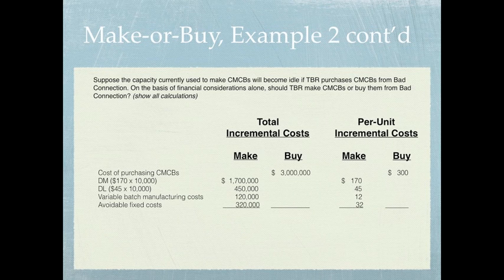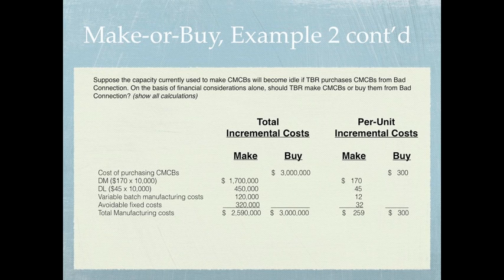Under the make decision we include the avoidable fixed costs, but not the unavoidable fixed costs. Since we're focusing on relevant information, the $800,000 unavoidable fixed cost would appear under both make and buy, so it cancels out and is not relevant. The relevant manufacturing cost to make is $2,590,000, or $259 per unit, versus $3,000,000 or $300 per unit to buy. Therefore, TBR should make the product and reject the offer from Bad Connection.